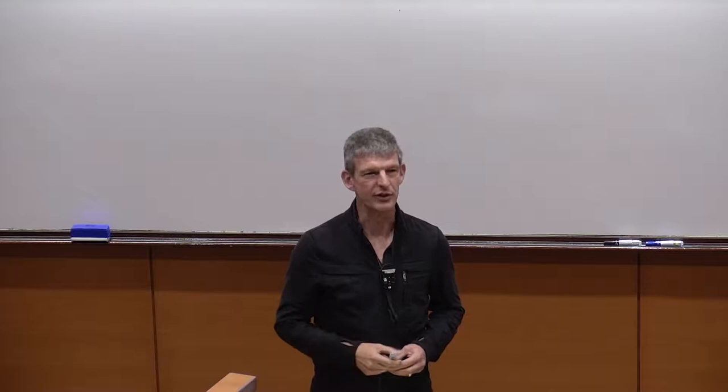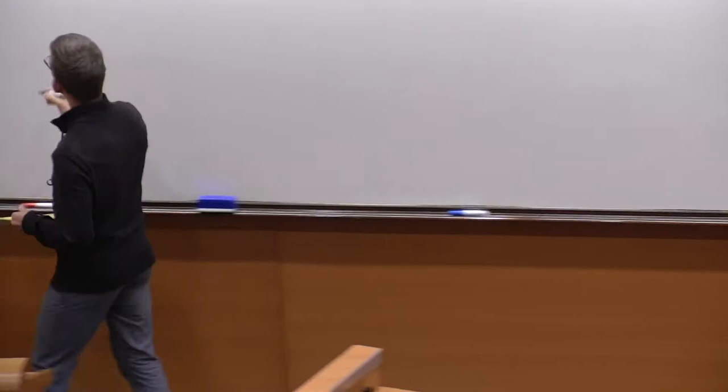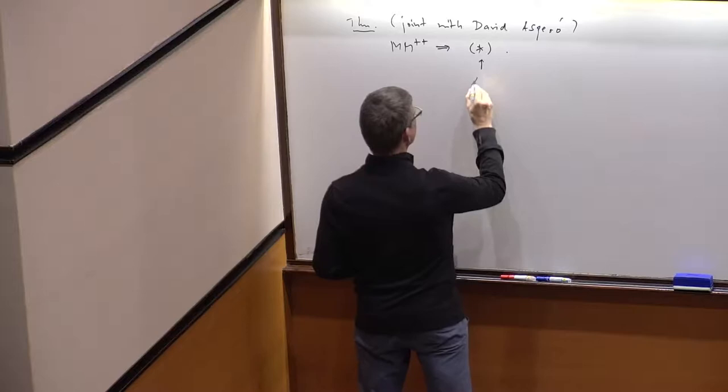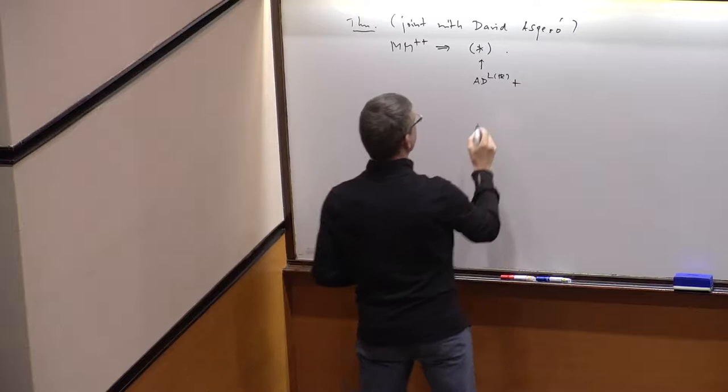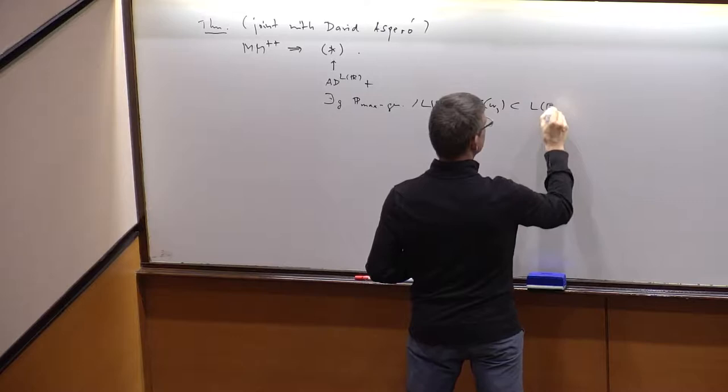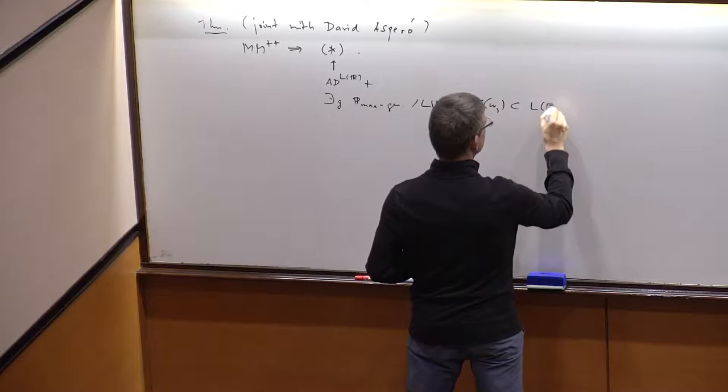And the Axiom Star is a conjunction of two statements. This I guess was introduced by Foreman–Magidor–Shelah. This was introduced by Hugh Woodin and it says two things: that AD holds in L(ℝ), and that there is a filter G which is P_max generic over L(ℝ) such that the power set of ω₁ of V is contained in the extension of L(ℝ).